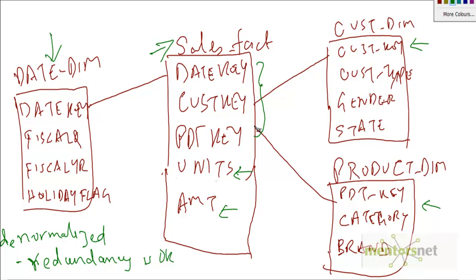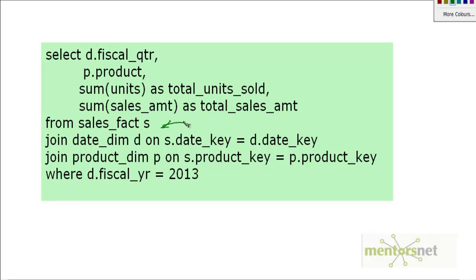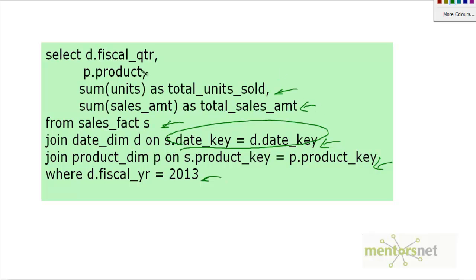The fact table has foreign keys to dimension tables. An example query would be: how many units were sold and what is the sales amount for all fiscal quarters in 2013, broken down by product? We join the sales fact table with the date dimension and the product dimension. The joins are very simplistic — always on the keys. There is always one key in the dimension table to join on. Then there is a filter on the dimension table attribute, and finally we do aggregations on the different measures.